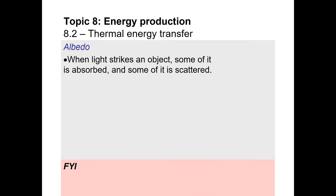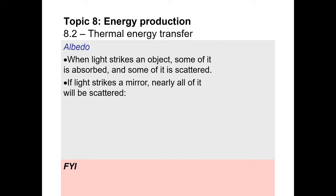Albedo. In grade 7 science you most likely learned about albedo. When we studied optics and light in physics, we saw that when light hits the surface of a material, part of it will be transmitted and part of it will be reflected — and that transmission could be in the form of refraction. Here we're not going to call it reflection; we'll call it scattered. Scattering can occur at different angles because the surface of a material could be uneven. If the angle of light comes in at a certain angle, it can reflect at a completely different angle.